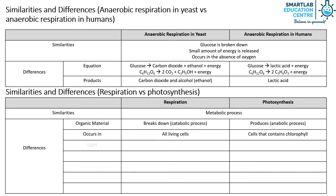Respiration takes place in the absence of light, but photosynthesis must take place in the presence of light. In respiration, glucose and oxygen are the reactants, but in photosynthesis, carbon dioxide and water are the reactants. In respiration, carbon dioxide and water are the products, but in photosynthesis, glucose and oxygen are the products.